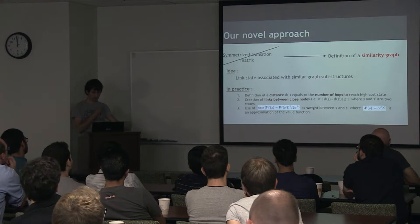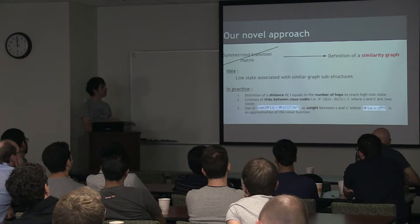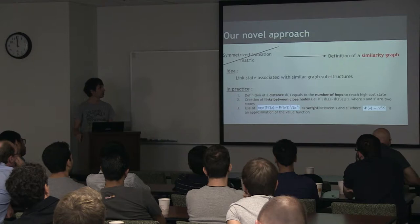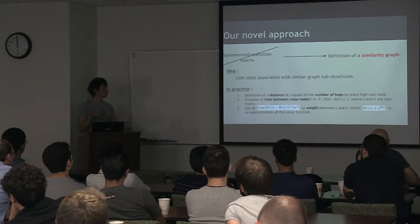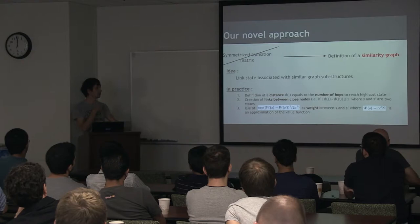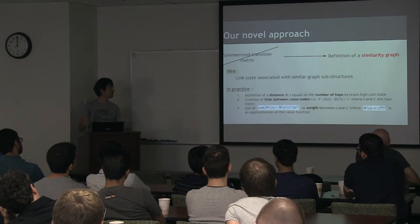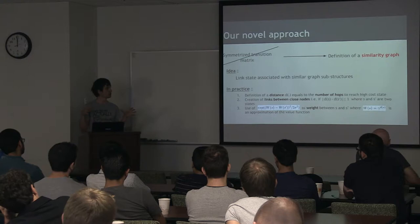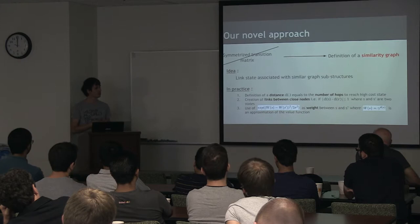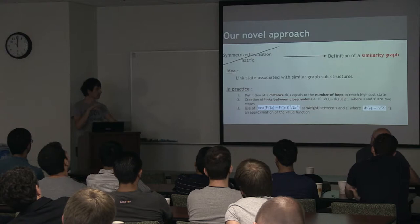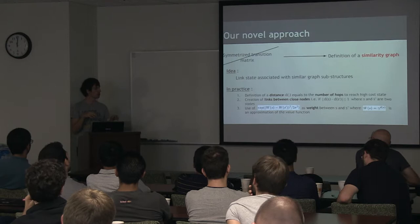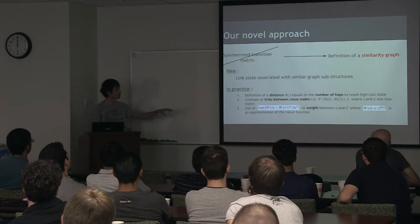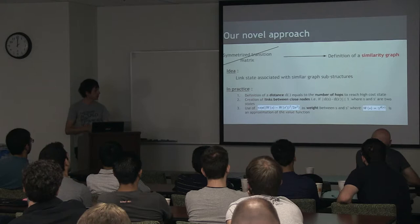But what I said is the basic method. Our novel approach is to replace the symmetrized transition matrix by a new matrix that we build from a graph we call the similarity graph. This graph has the same nodes as the graph I presented to you before, but the links are different. The links are created to associate similar substructure in our graph. In practice, we define a distance, which is the number of hops to reach ICOS state, and then we link nodes with the same distance or close distance. And finally, we set weight on the edges with this formula, where W is an estimator of our value function.